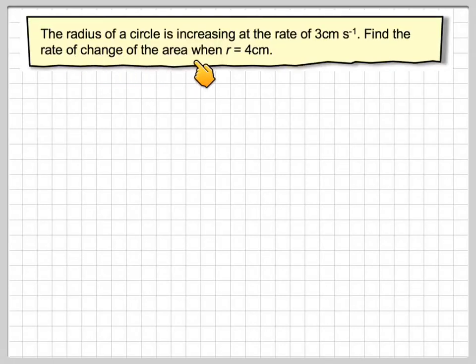The radius of a circle is increasing at the rate of 3 centimetres per second. Find the rate of change of the area when r is equal to 4 centimetres.